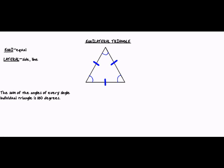Now, the sum of the angles of every single triangle is 180 degrees. And since our sides are equal, that means our angles are equal as well. And the three equal angles equal 60 degrees each, because 180 degrees divided by 3 is 60.